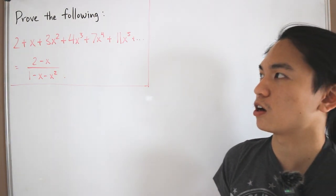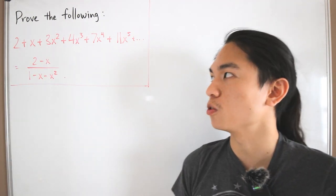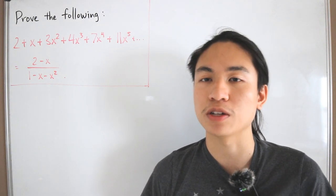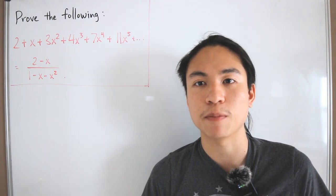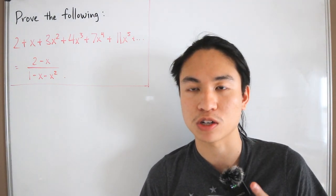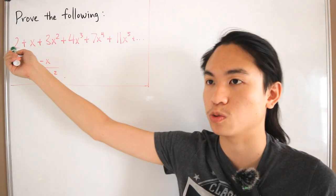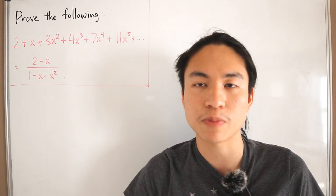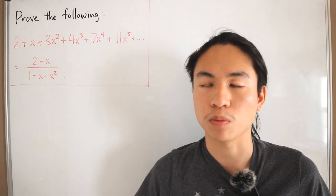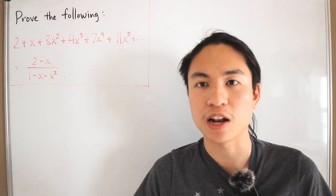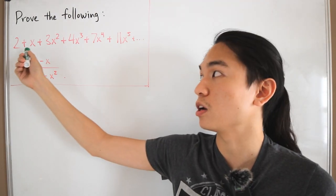This might look a little confusing, but if you pay attention to the coefficients closely, you'll notice they form a very nice sequence. These are what are known as Lucas numbers. Lucas numbers are another way of approaching it like Fibonacci numbers, except the first two terms start at different values. Lucas numbers start with 2 and 1 for n equals 0 and n equals 1 respectively, meanwhile Fibonacci starts at 1 and 1 for n equals 1 and n equals 2 respectively.